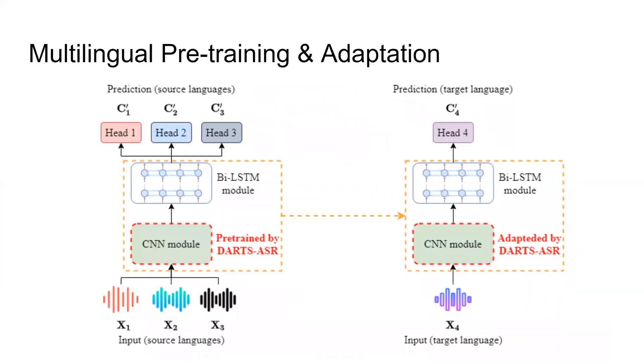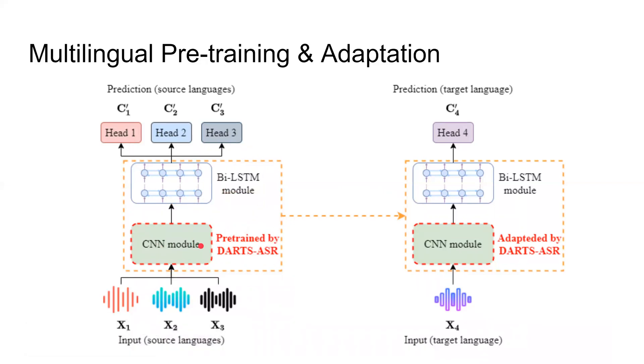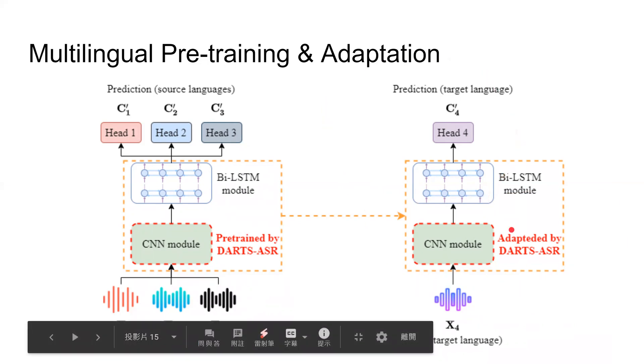Next, I'm going to describe the multilingual ASR setting. In this setting, we pre-train a single shared ASR model on all source languages, except different heads for different languages, hoping to find a generally good architecture for many languages. Then we fine-tune the pre-trained model on target languages to see the generalizability of DARTS-ASR.